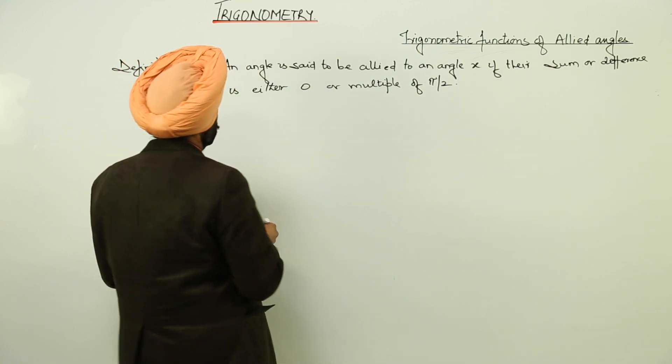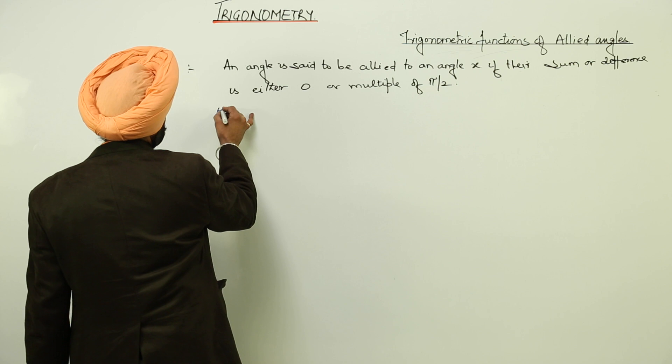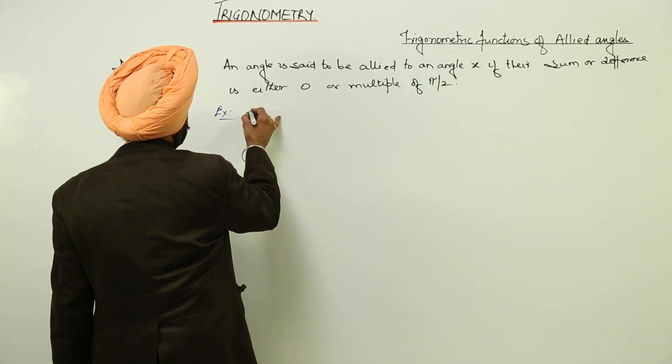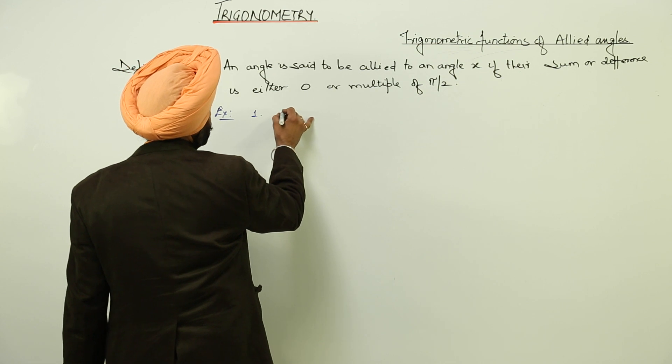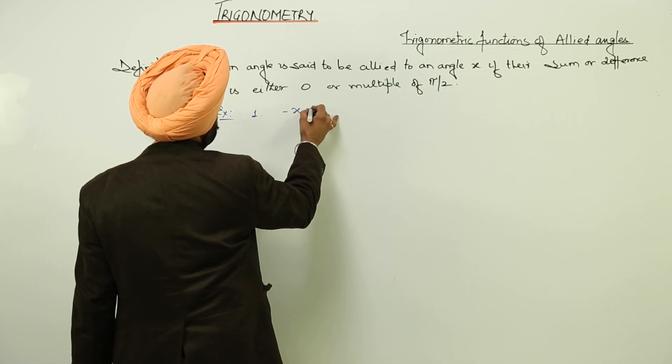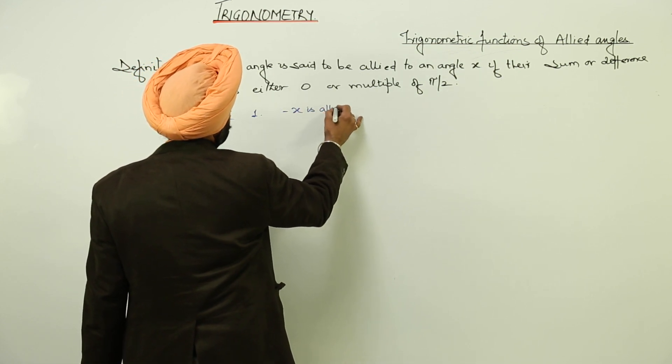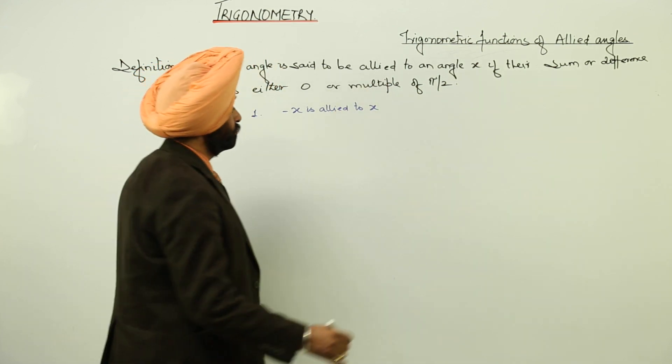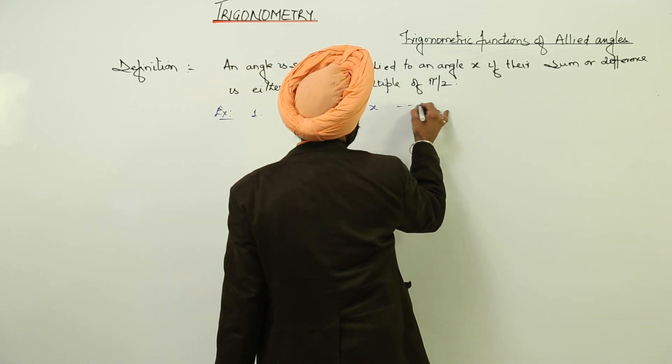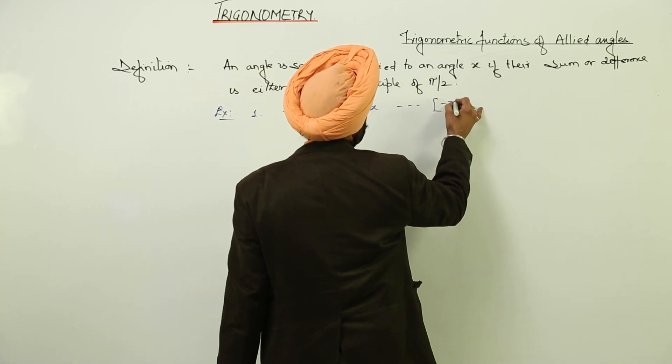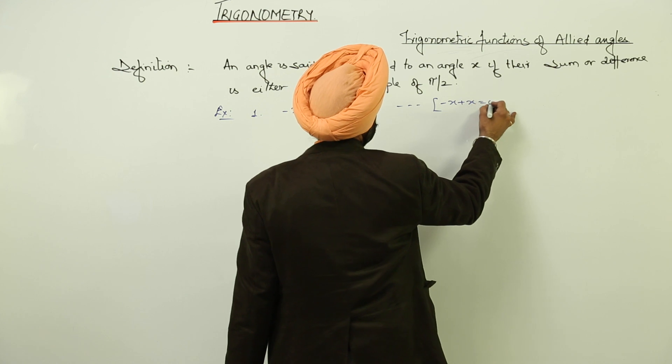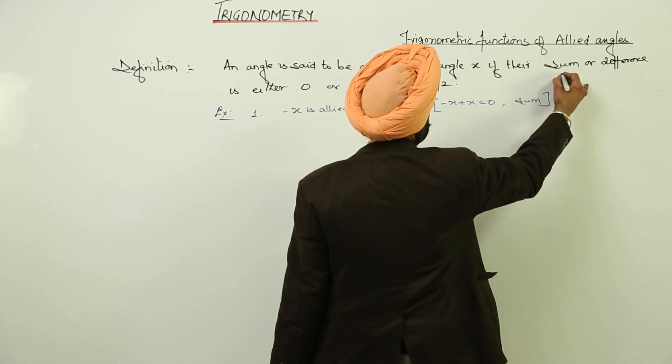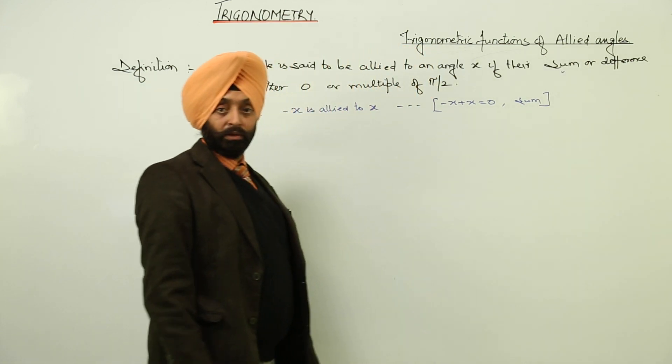Now, let's check examples now. Let's go for an example. Number 1. You can check it. Negative of x is allied to x. Now, how? Just look here. Negative of x plus x is equal to 0 means sum. We are discussing about sum. It becomes 0.